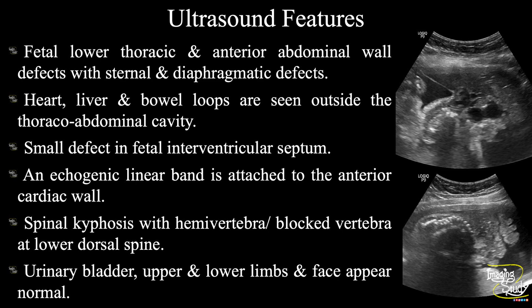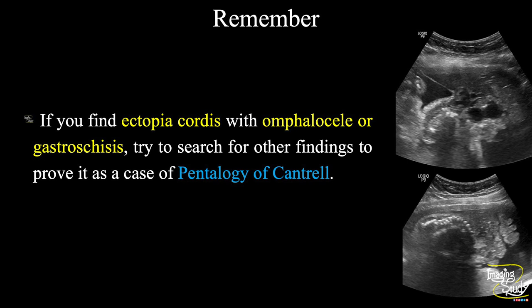In summary: fetal lower thoracic and anterior abdominal wall defects are seen along with sternal and diaphragmatic defects. The heart, liver, intestine, and kidneys are noted outside the abdomen — a combination of gastroschisis and ectopia cordis. A small ventricular septal defect is noted. An echogenic linear amniotic band is seen attached to the anterior margin of the fetal heart. Spinal kyphosis is seen with hemivertebra or blocked vertebra at the lower dorsal spine. Bladder, upper and lower limbs, and face appear normal. All these features suggest a case of pentalogy of Cantrell. The take-home message: if you find ectopia cordis with omphalocele or gastroschisis, search for other findings to confirm pentalogy of Cantrell.